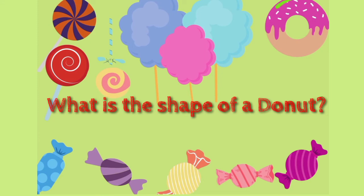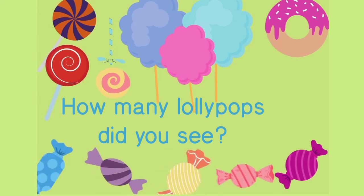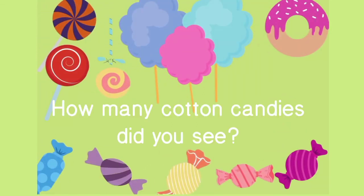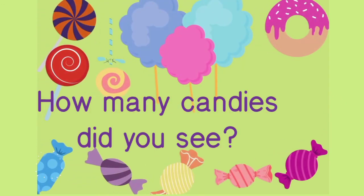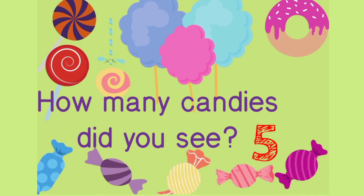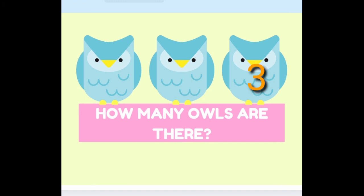What is the shape of a donut? Circle. How many lollipops did you see? One, two, three — three lollipops! How many cotton candies did you see? Three. How many candies did you see? Five candies. What's the color of the owls? Blue. How many owls are there? Three — one, two, three!